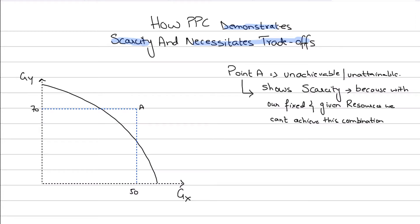I've drawn a normal PPC curve here — it's concave to the origin, with good X and good Y on the axes. Point A is outside the production possibility curve, meaning it is unachievable or unattainable. Points outside the PPC are unattainable because the PPC tells us the maximum possible combinations that the economy or firm could produce, and Point A is beyond those limits.